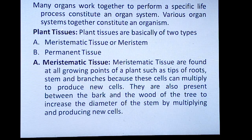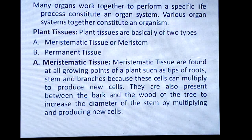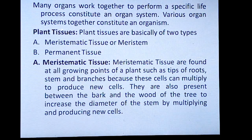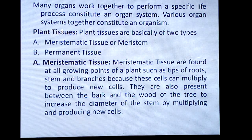We are learning about meristematic tissue. Meristematic tissues are found at growing points of plants such as tips of roots, stem, and branches, because these cells can multiply to produce new cells. You might have seen a germinating potato with small eyes — if you observe those under a microscope, you will find meristematic tissue. Root tips and sprouts also contain meristematic tissue. They are also present between the bark and the wood of the tree to increase the diameter of the stem by multiplying and producing new cells.